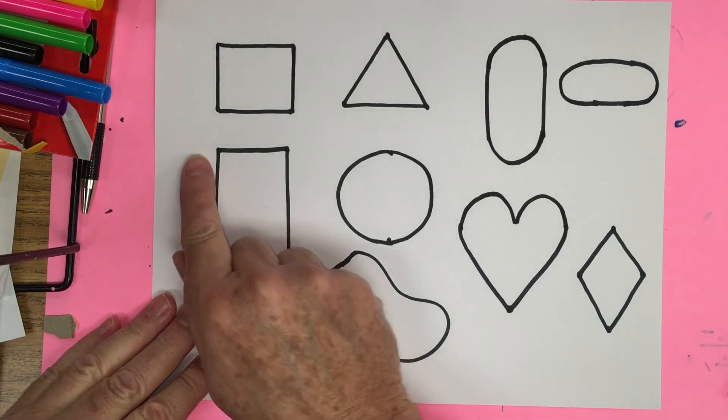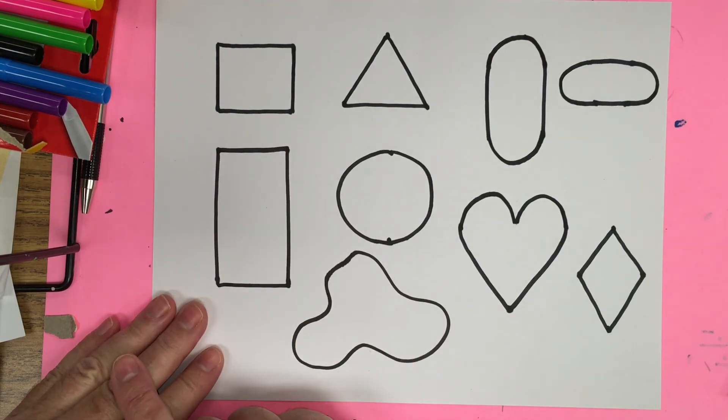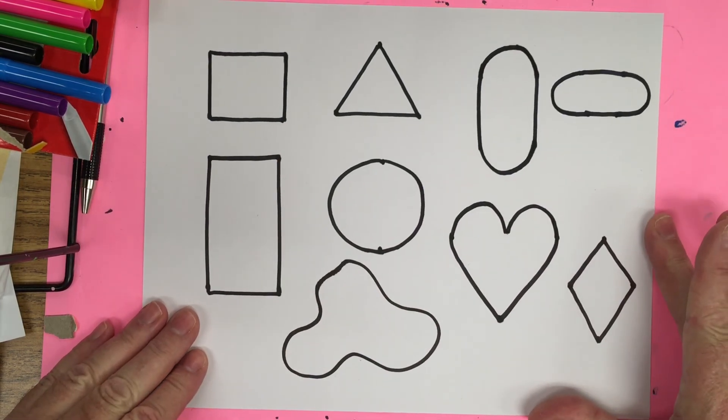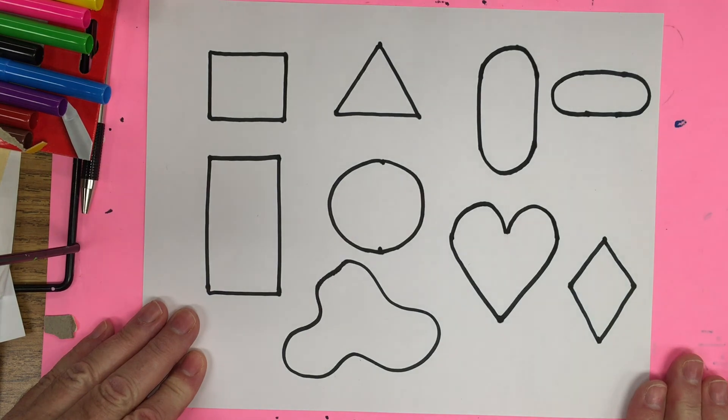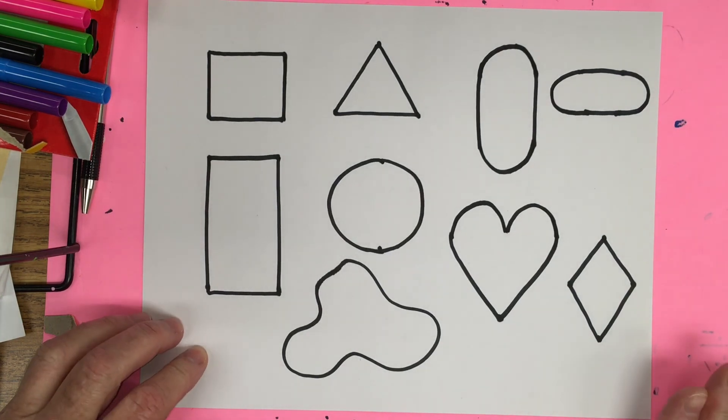So we're going to go slow and we're going to practice all of these shapes and look how beautiful they are. This is what you're going to be making today.